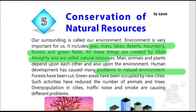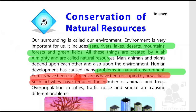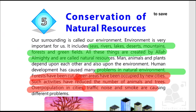Let's highlight the problems in red because these are problems. Forests have been cut, green areas have been occupied by new cities, and due to these two major problems, the number of animals and trees has reduced greatly. Not only this, but overpopulation in cities, traffic noise and smoke are also causing different problems.